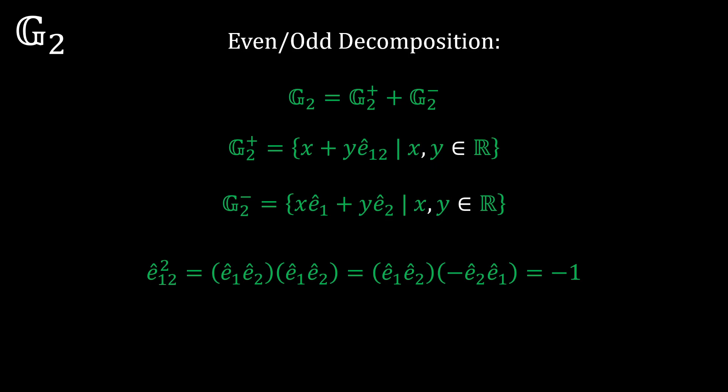Remember in my last video how I mentioned complex numbers? Well, the even subalgebra is isomorphic to the complex algebra. As for the odd subalgebra, it's simply isomorphic to the real number plane. Therefore, while the g1 algebra described the hyperbolic algebra, the g2 algebra unifies the complex and real algebras.